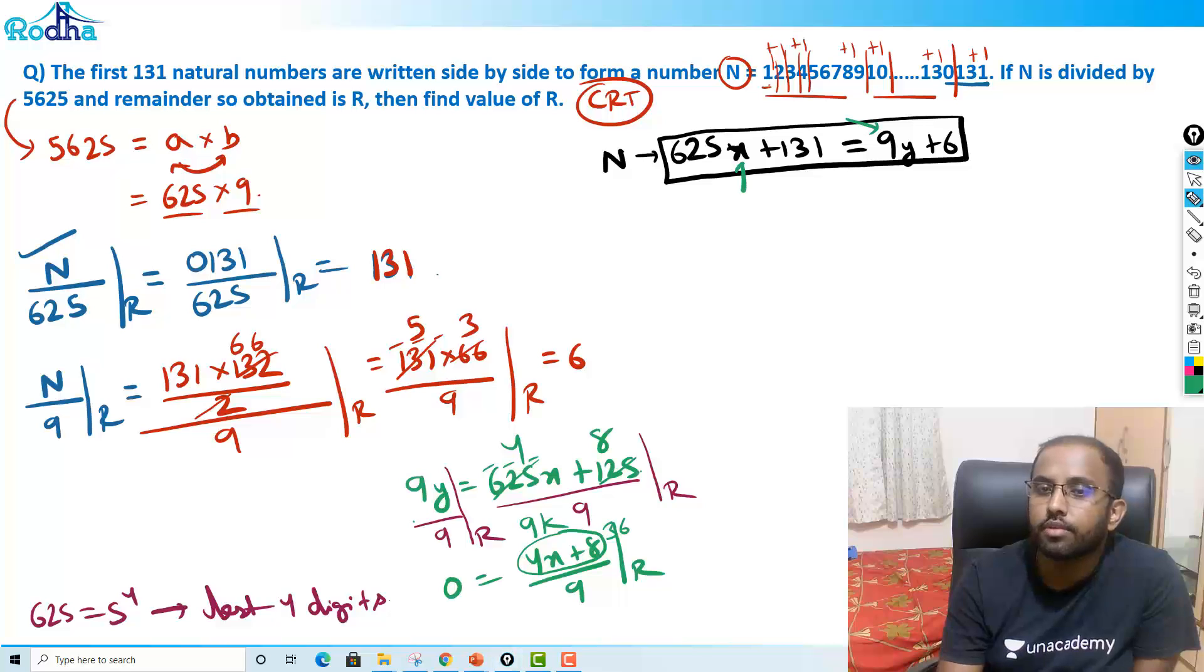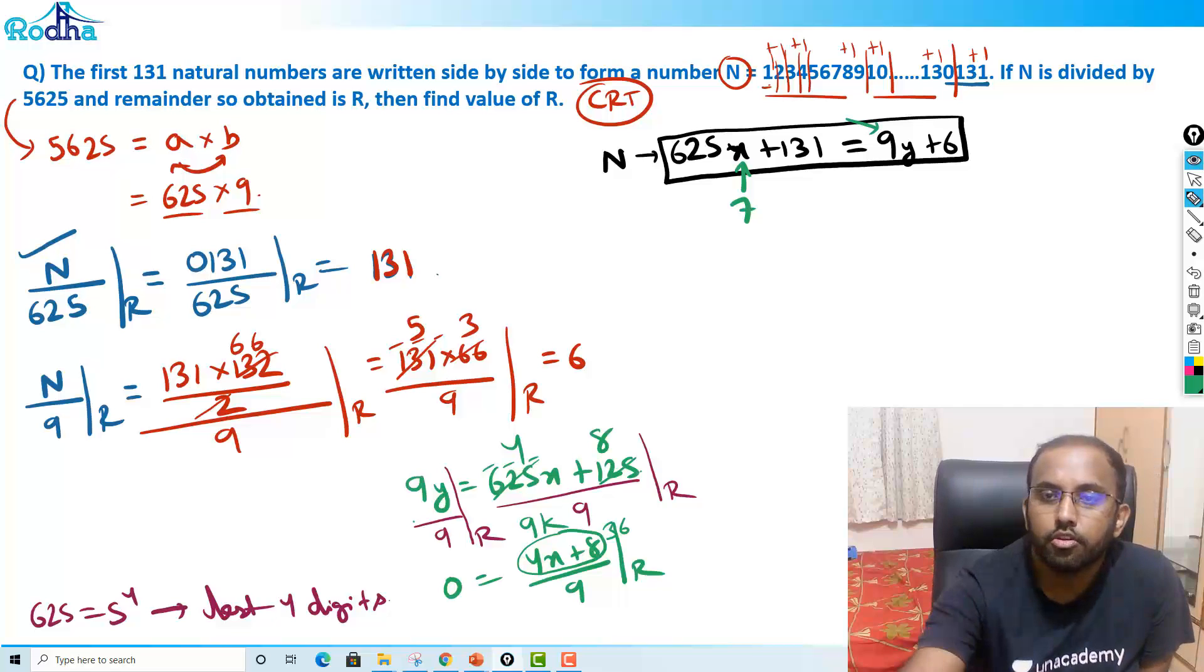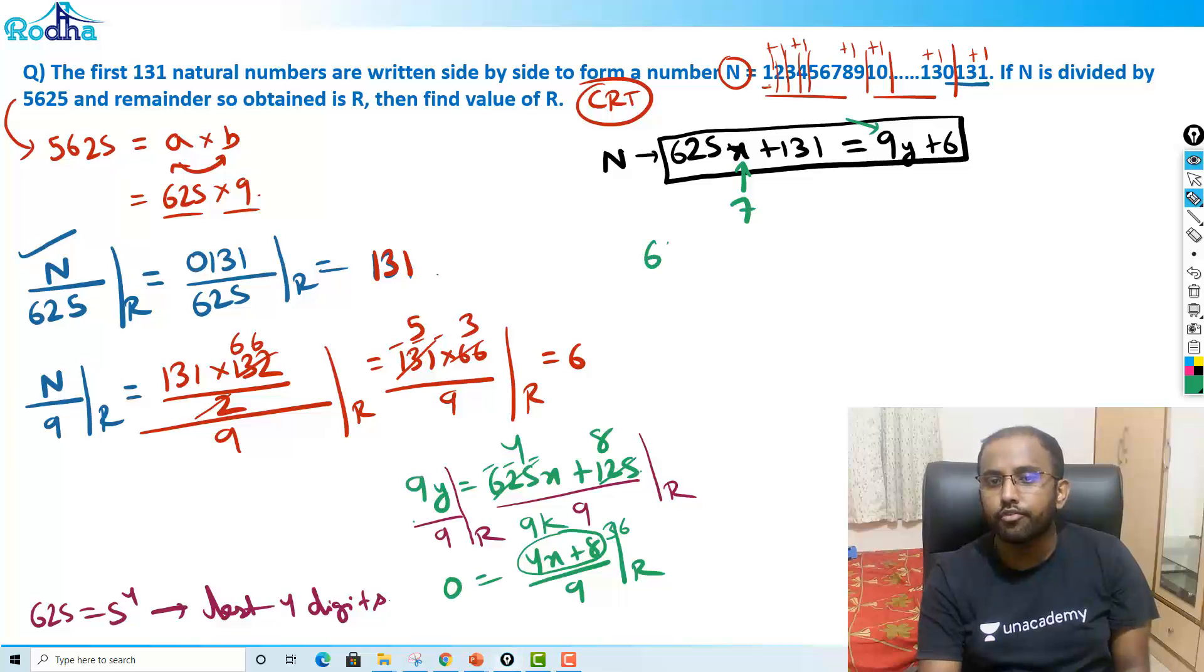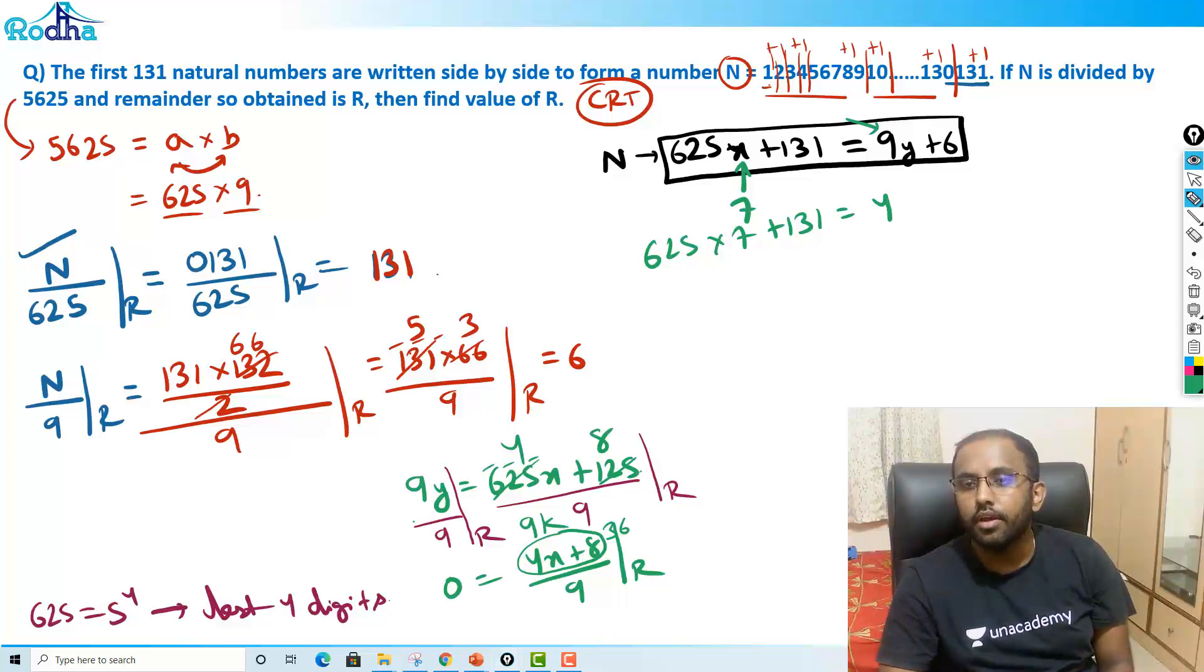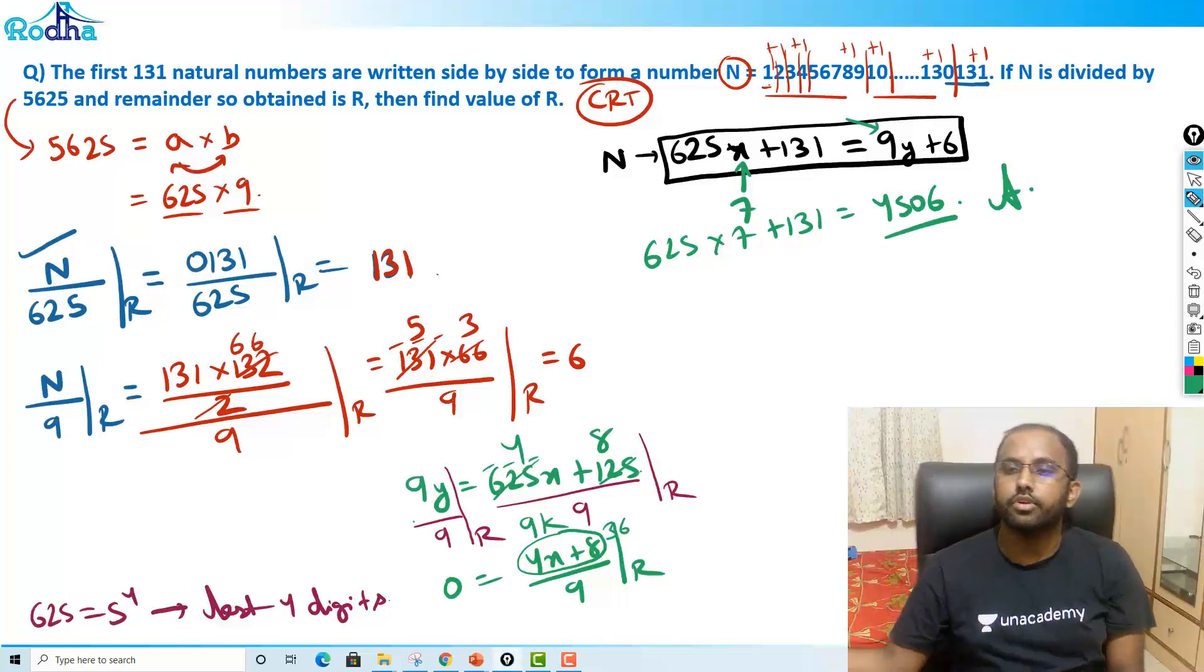That means x = 7 I should put here. If I put x = 7 here, my answer will become what? So if I put x = 7 here, 625 × 7 + 131 = 4,375 + 131. 4,506 is the answer for this question.